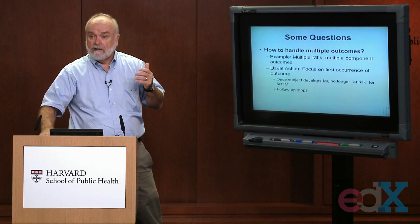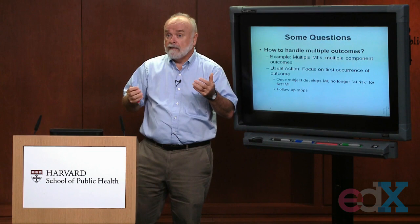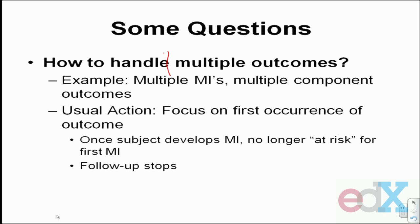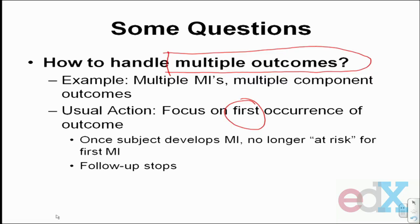What about the person who develops a heart attack during follow-up, survives, has another heart attack a year later, and then a third one two years after that? How do you handle multiple outcomes when following people over time? The usual approach is to look at the first event — follow people until they develop their first myocardial infarction, and once they have it, stop following them. We're only interested in the risk of a first myocardial infarction, and you're no longer at risk for a first event once you've had one.